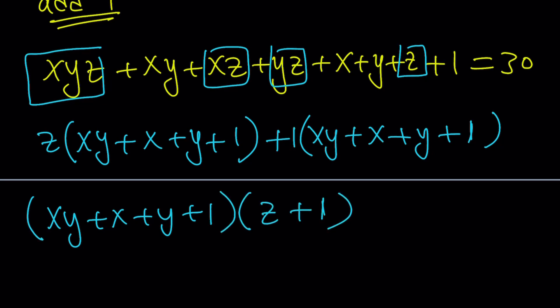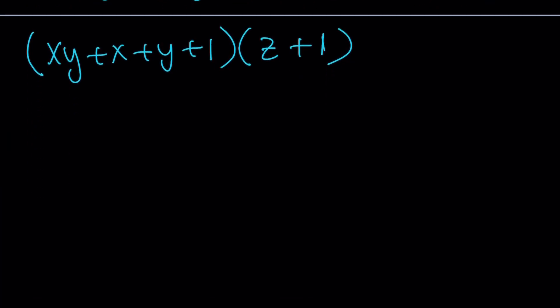Now, we do have the same thing in parentheses, so let's go ahead and take it out. x, y plus x plus y plus 1. We'll deal with that separately. Multiply by z plus 1. This is called factoring by grouping.